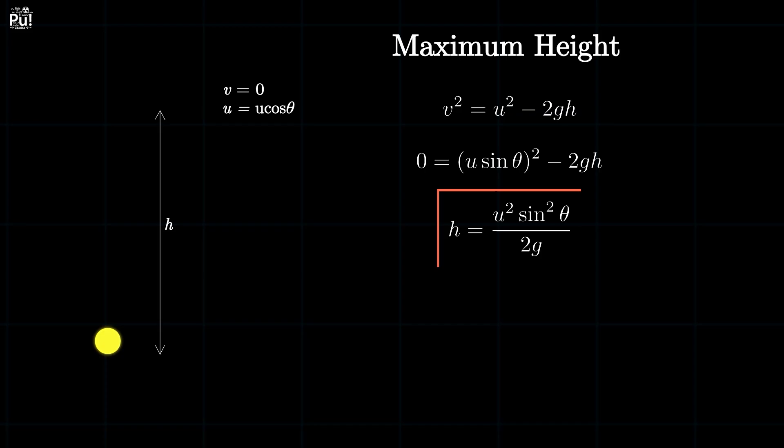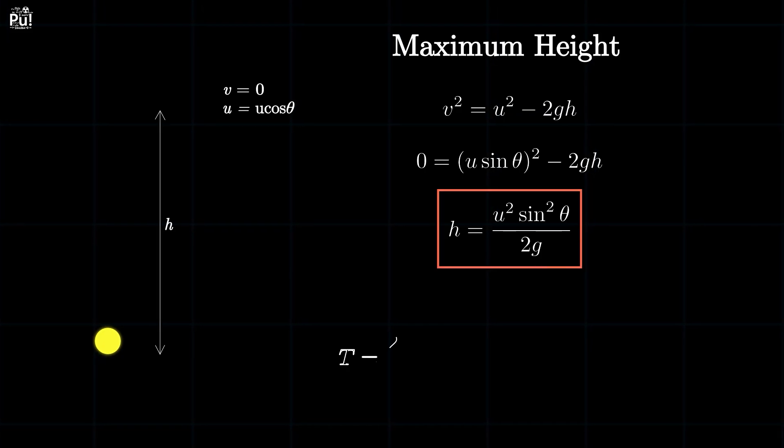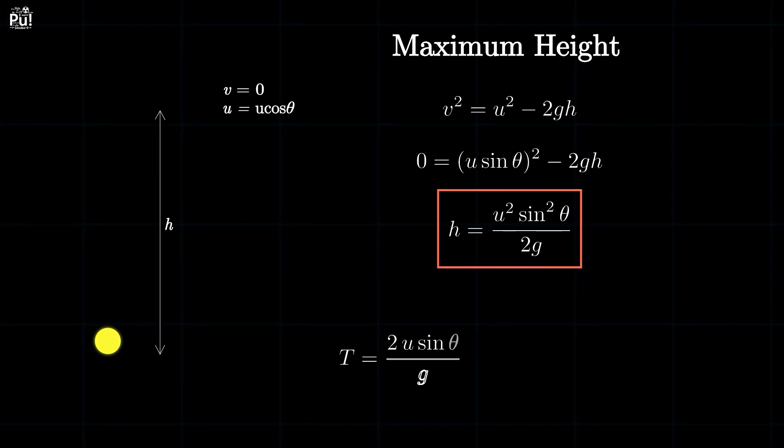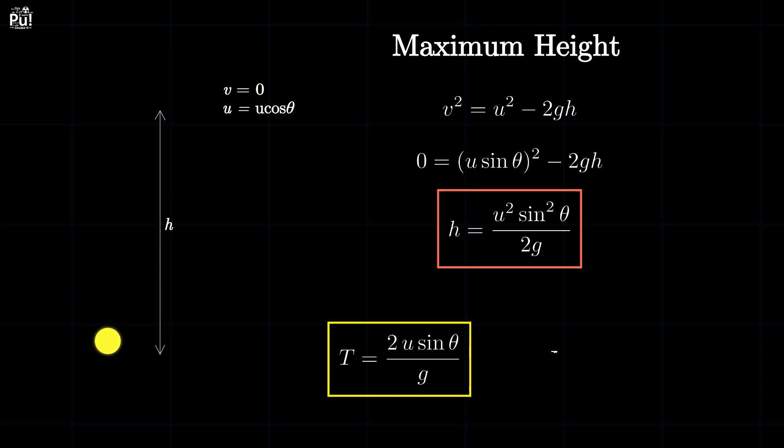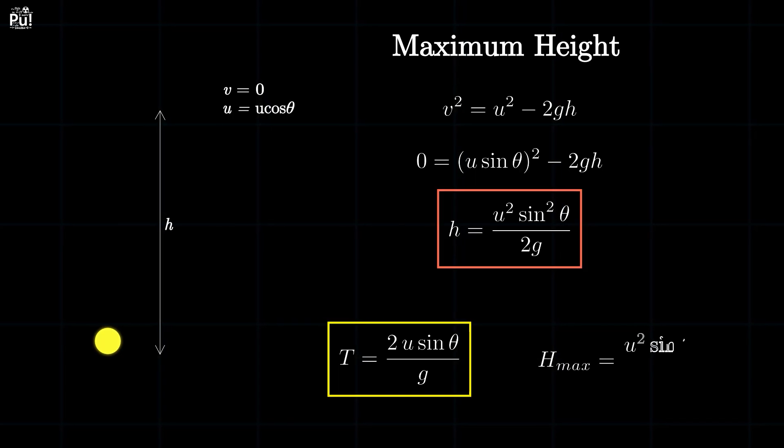So just from understanding vertical motion, we've now got time of flight 2u sine theta by g, maximum height u squared sine squared theta by 2g.